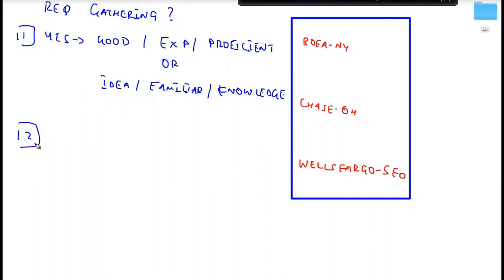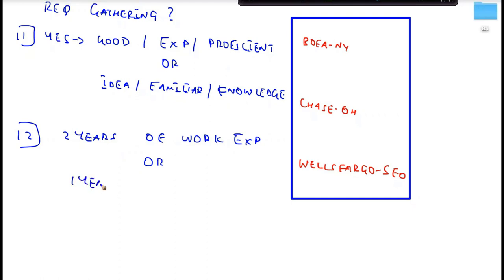Step number two: it is always important that you mention years of experience. A recruiter is very curious to know the number of years of experience you have on the particular question being asked. If you're very confident, you can say 'I have two or three years of work experience.' If you're not that confident, you can use academic experience — for example, 'I have one year of academic experience,' meaning in school you did a project and used this particular skill.